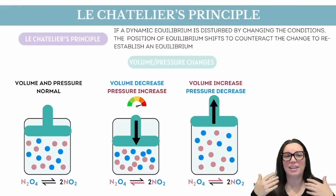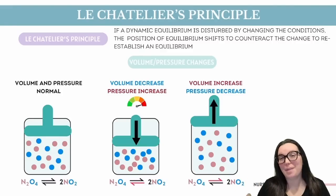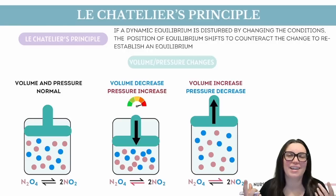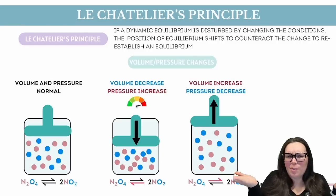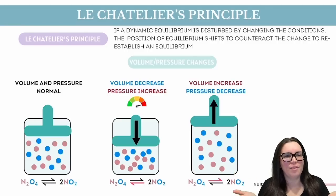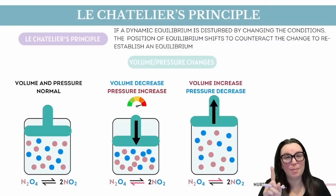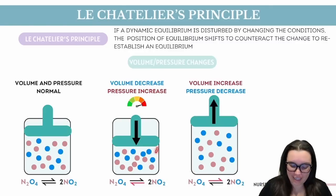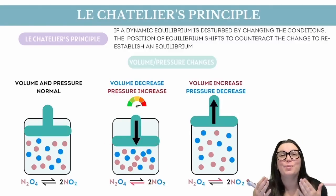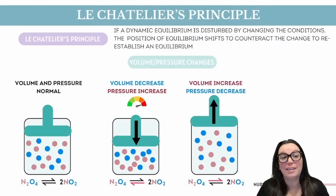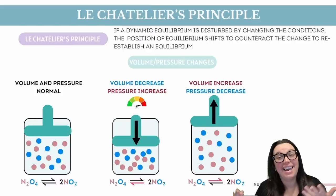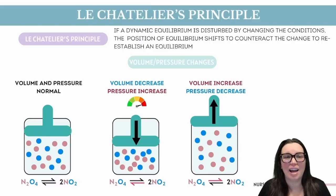The third type of stress we can look at is changing the volume or pressure. Imagine we have an equilibrium involving gases inside of a beaker. But what happens if we reduce the volume of the beaker by pushing down on the plunger? According to Boyle's law, decreasing the volume increases pressure because the particles have less space and they collide more often with the container sides.